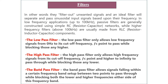Then we have the band-pass filter. A band-pass filter passes a band — a particular range of frequencies — and blocks frequencies on both sides outside that range.